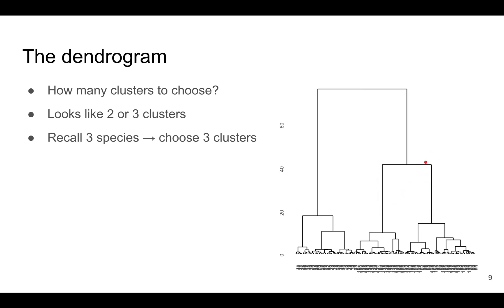Any other choice doesn't really seem quite natural. Since there are three species of iris that we want to predict, it seems to be a good idea to choose three clusters. And that's what we're going to do.